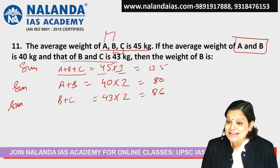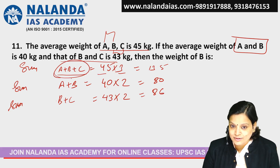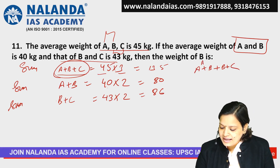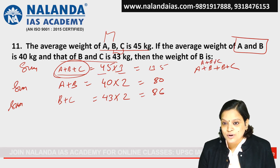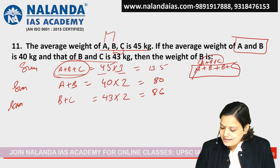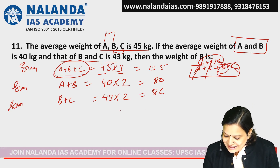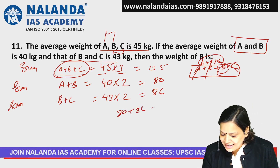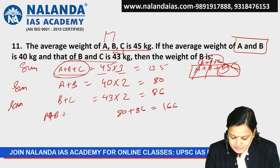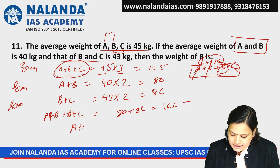Now, A plus B plus C equals 135. If I take A plus B plus B plus C, that gives us 80 plus 86 equals 166. Then subtracting A plus B plus C, which is 135, from 166 gives us the weight of B.